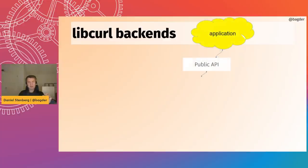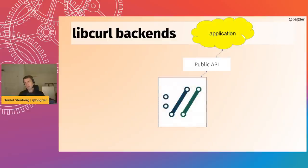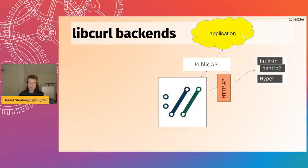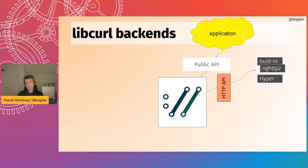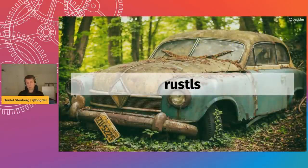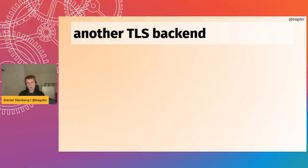When an application talks to libcurl it talks through the public API — the same stable one in use for decades. Then the core libcurl has an internal HTTP API that can select between the built-in native code or the hyper code. I did most of this work last year. It's not fully completed yet, but there are also other Rust-based components in curl.